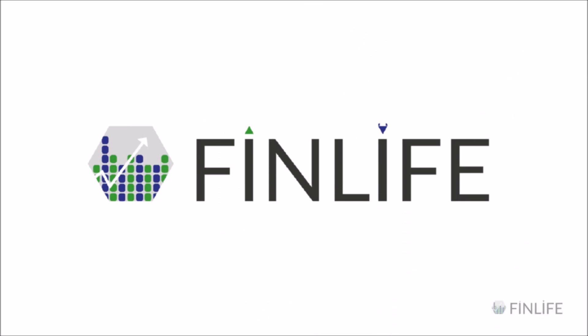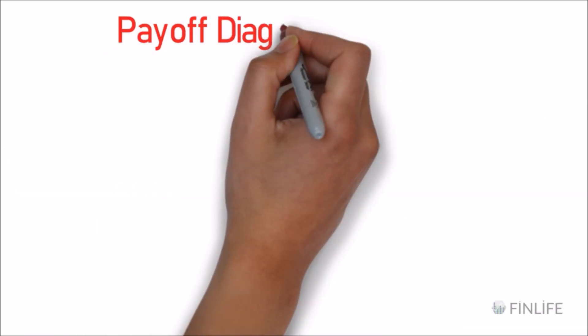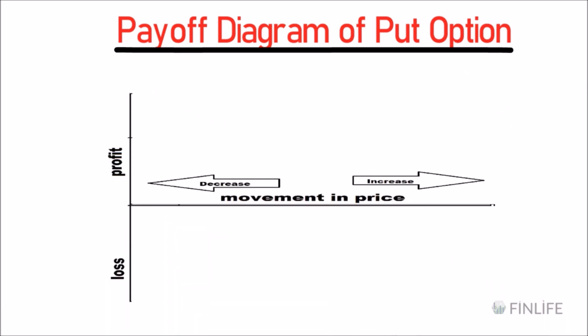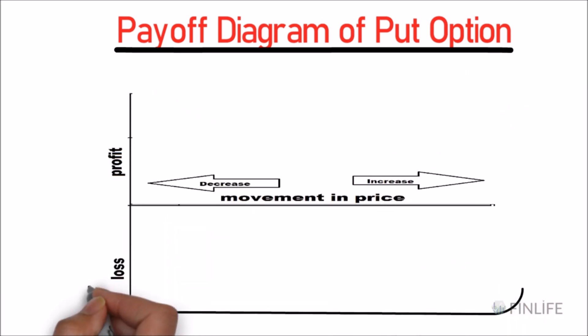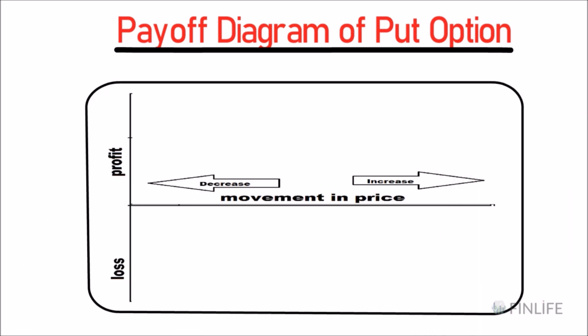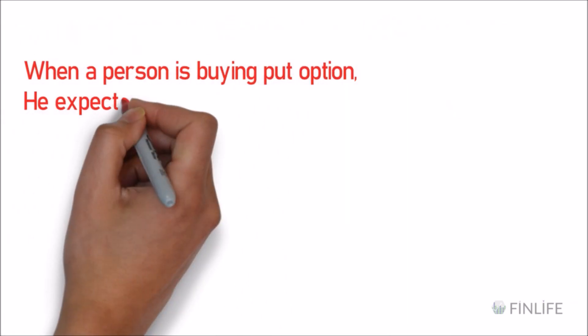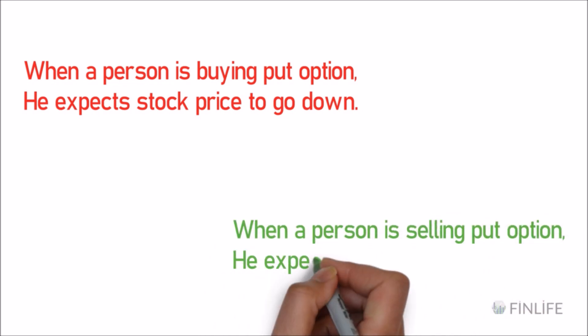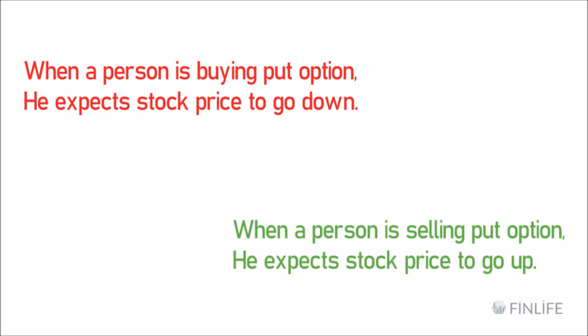Hi guys, this is Sidhan from FinLife. In this video we'll be understanding the payoff diagram for put options — specifically what happens when a person is buying a put option versus when a person is selling a put option. When buying a put, the person expects the stock price to go down; when selling, they expect it to go up.